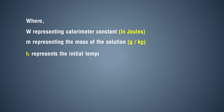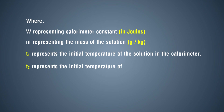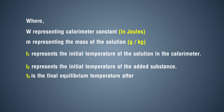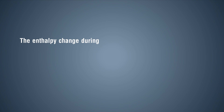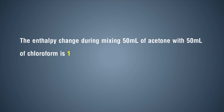T1 represents the initial temperature of the solution in the calorimeter. T2 represents the initial temperature of the added substance. T3 is the final equilibrium temperature after mixing. Result and discussion: The enthalpy change during mixing 50 milliliters of acetone with 50 milliliters of chloroform is 10,478.92 joules.